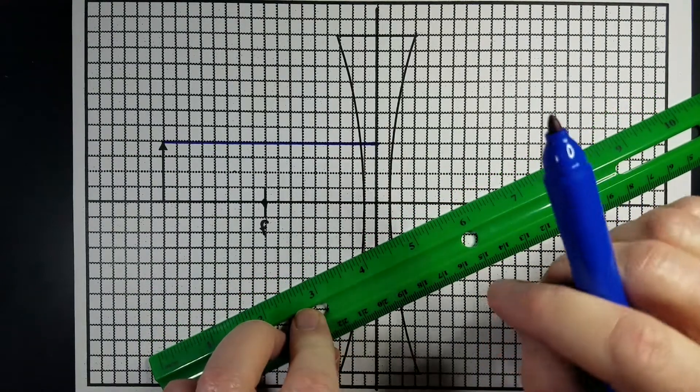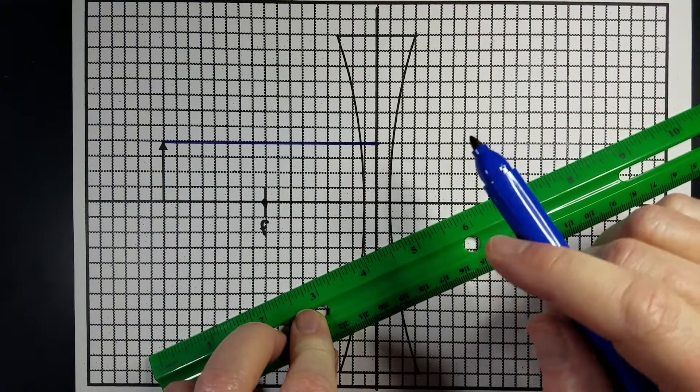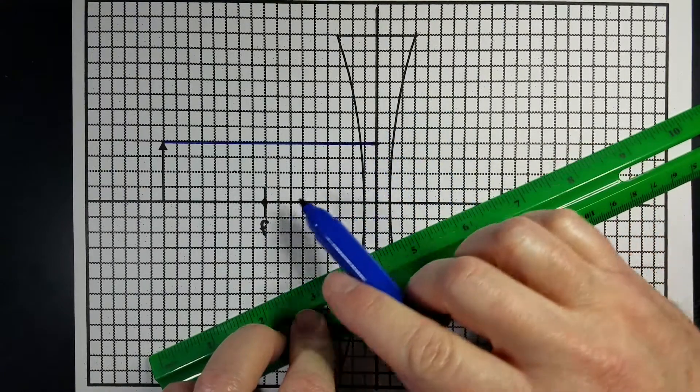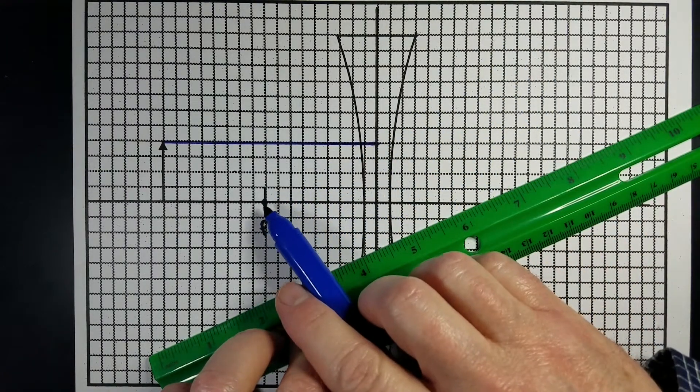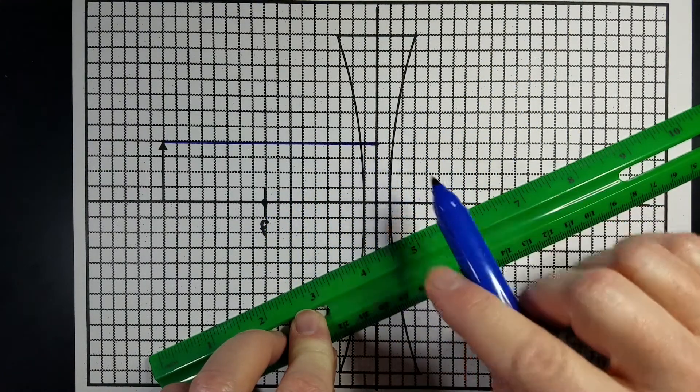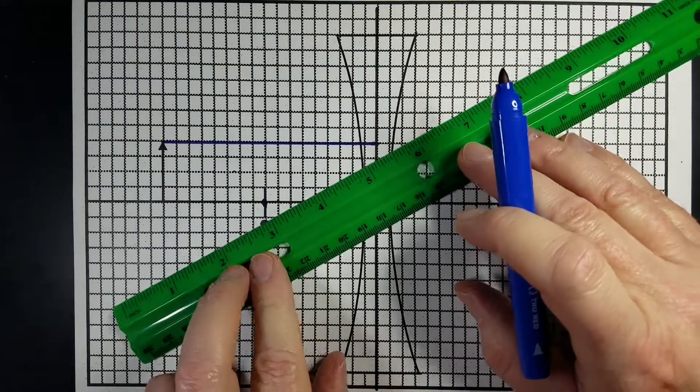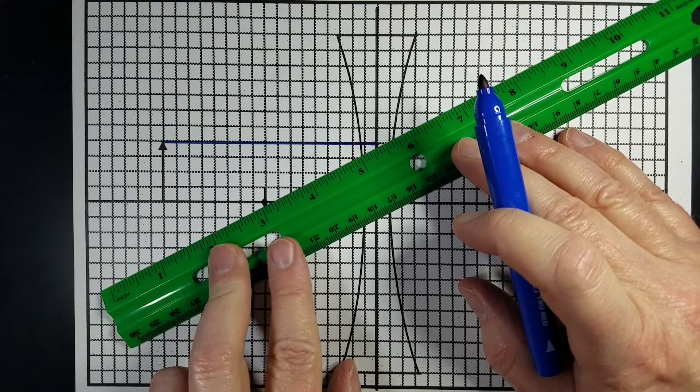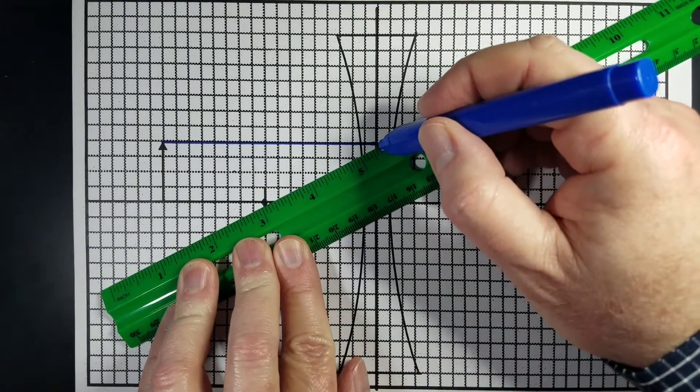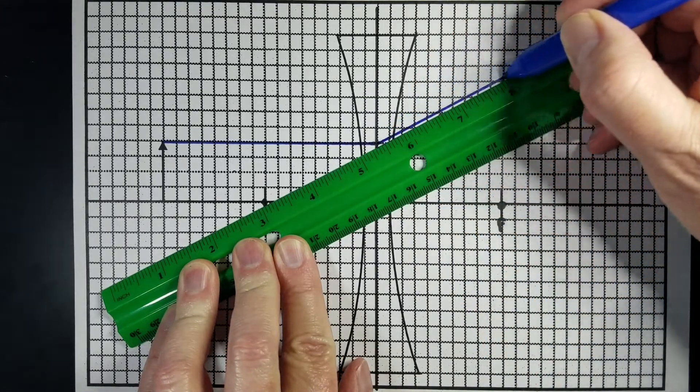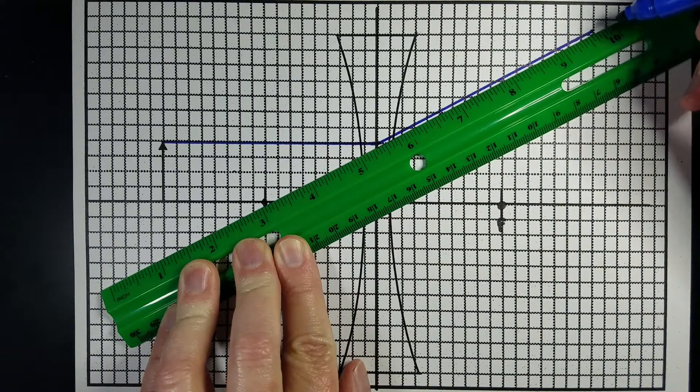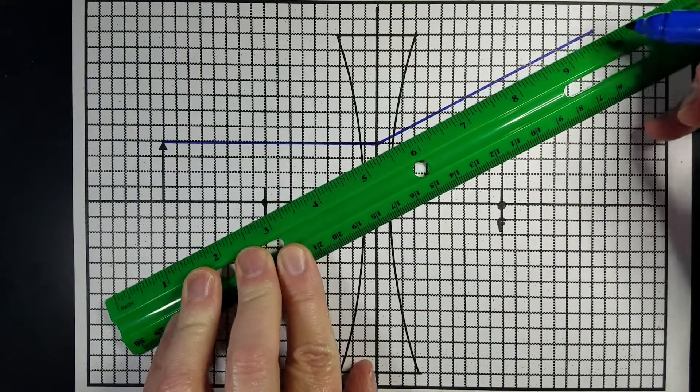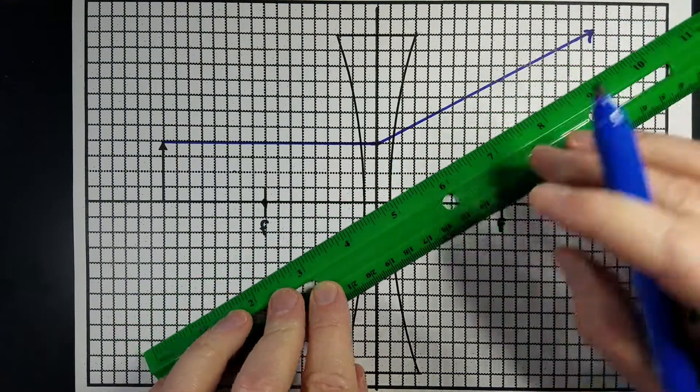And then light will always bend towards the thicker part of the lens. So for a concave lens, it's going to bend up away from the near focal point. For a convex lens, it's going to bend down because the thicker part of a convex lens is the middle. But for this one, we're going to go away from that focal point, and it's going to go that way. And I am going to go ahead and draw that arrow in.